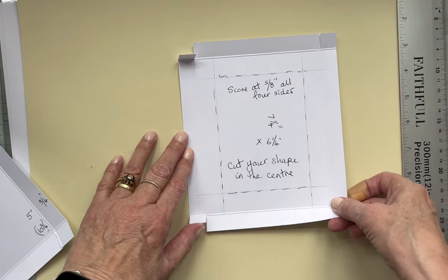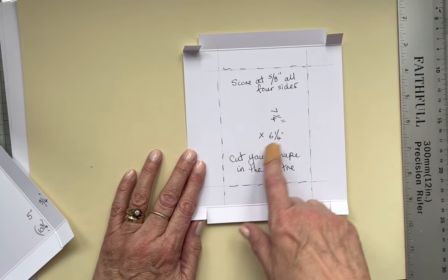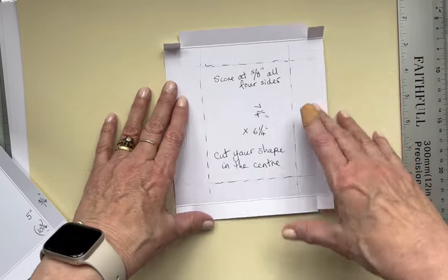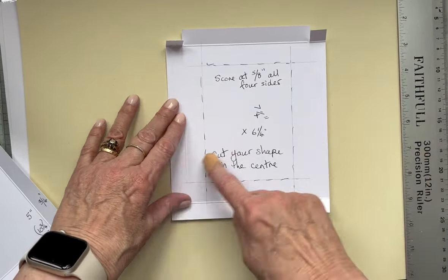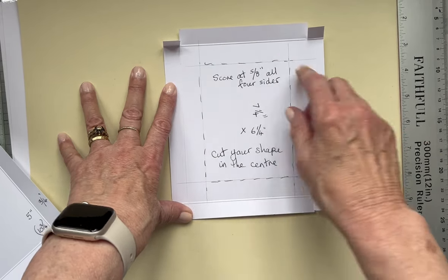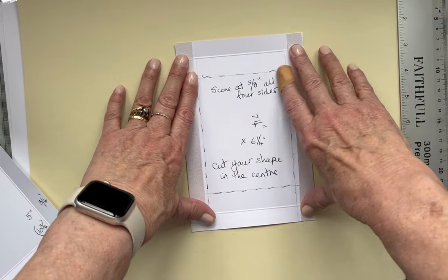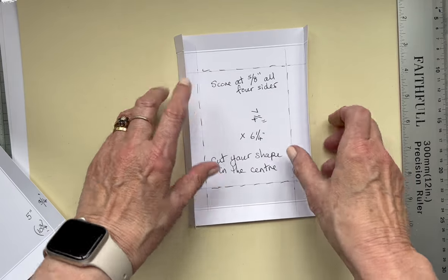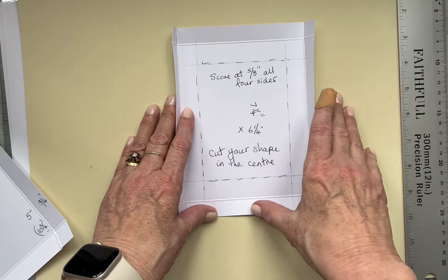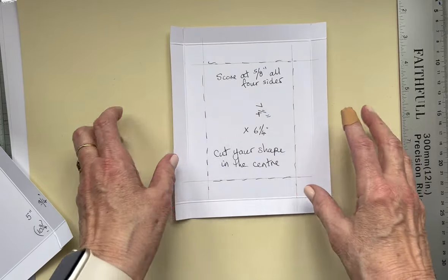The other piece, which is going to be the inside of the box, it's seven and a quarter by six and a quarter. It's going to be up this way, so it's going to be the shorter side going across here. You score five eighths on all four sides. And then whatever shape you're going to have in the middle, you're going to die cut or using a sharp blade with a metal ruler, cut your shape in the middle there to cut it out.